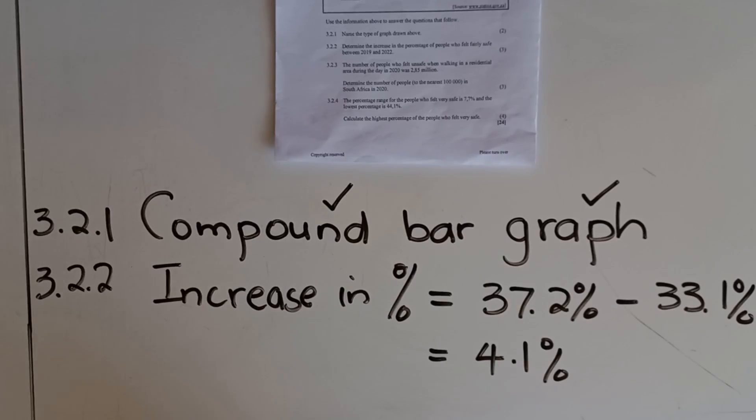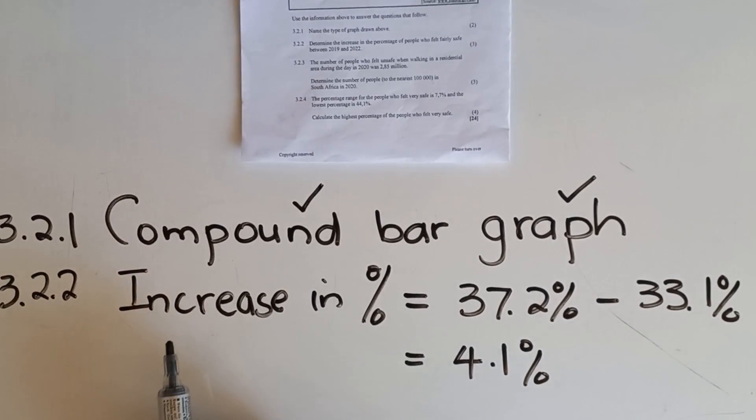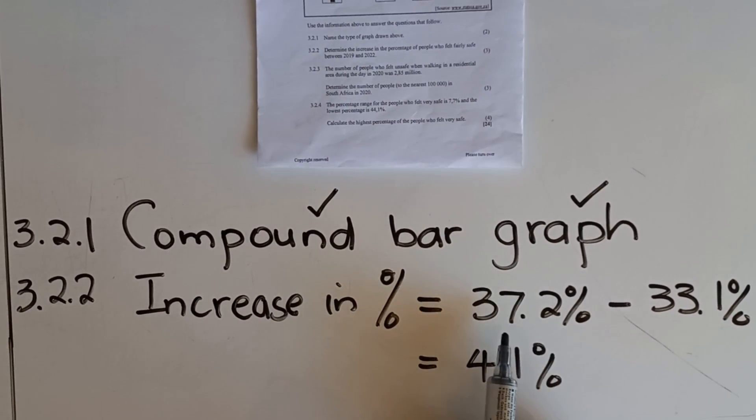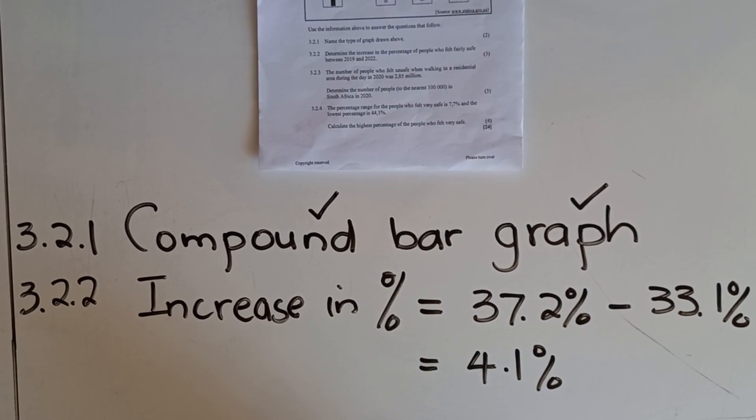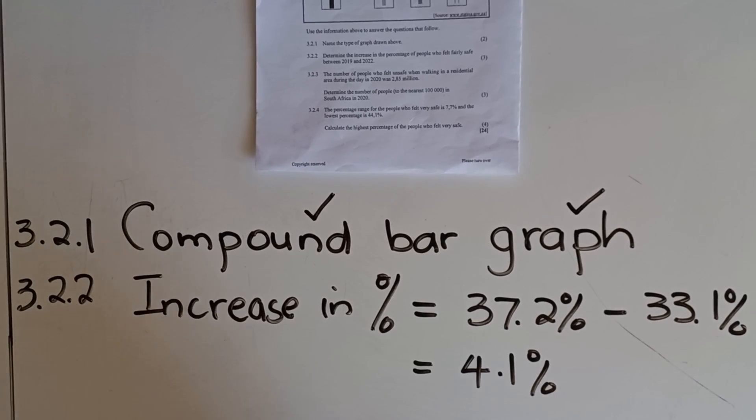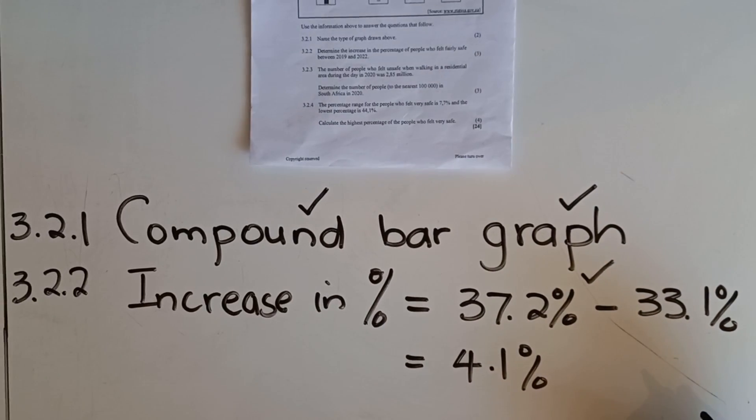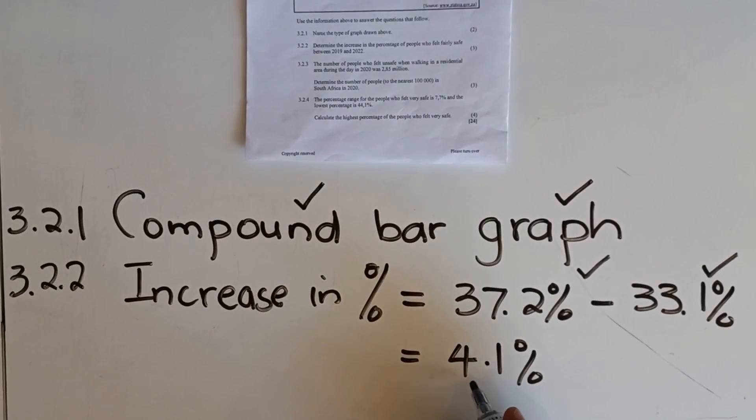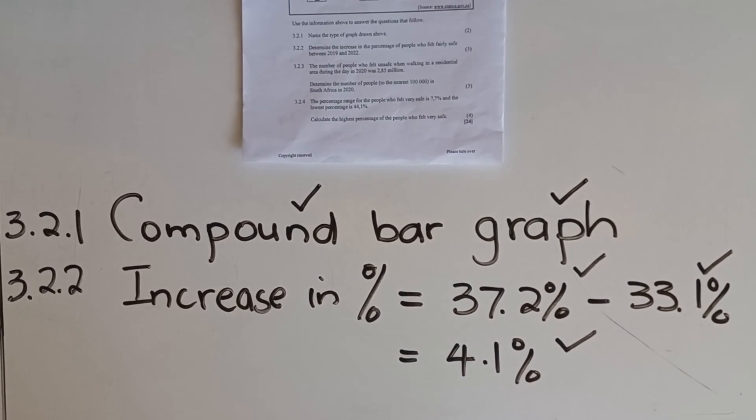Let's write the answer. Write increase in percentage. Most learners don't write and explain to the examiner what you are writing. You just come with 37 minus 34. At the end of the year somebody else is gonna mark your script. So write properly and explain to the person who's marking your script. So you get 37.2 minus 33.1 percent and the percentage increase is 4.1 percent.